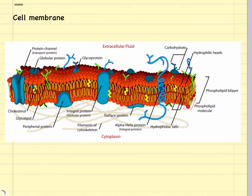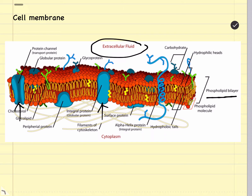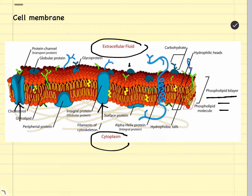In order to understand drug absorption, we must look at the cell membrane. The cell membrane is a lipid bilayer with different types of proteins and channels in the membrane. The extracellular fluid and the cytoplasm are both aqueous environments, whereas the phospholipid bilayer is a lipid or fatty layer that prevents the passage of large molecules, hydrophilic molecules, and certain ions — making the cell membrane selectively permeable. Molecules that are charged are going to have a harder time getting in, whereas a lipid-soluble molecule will have an easier time absorbing through that cell membrane.